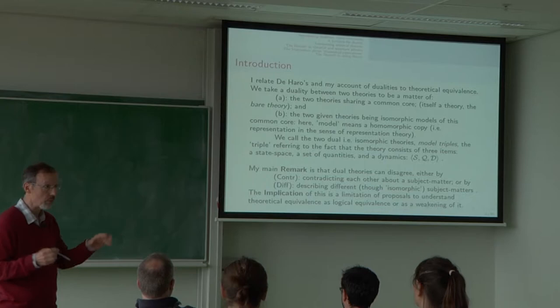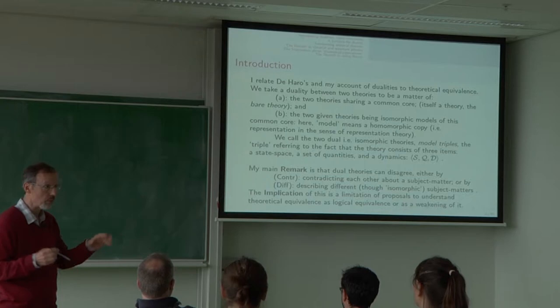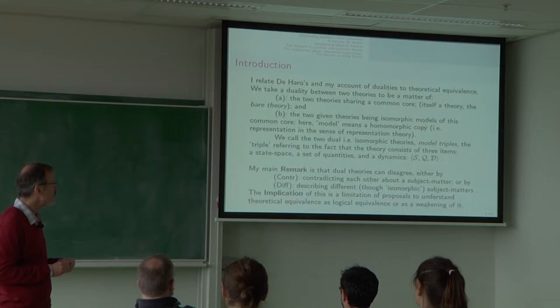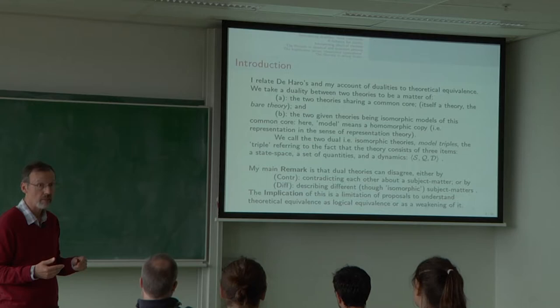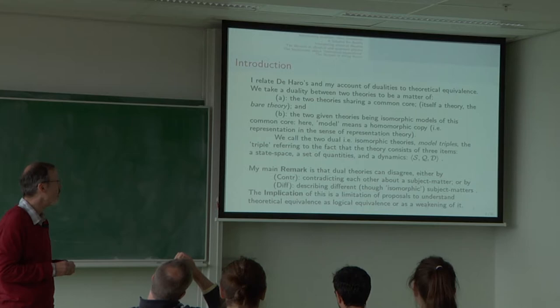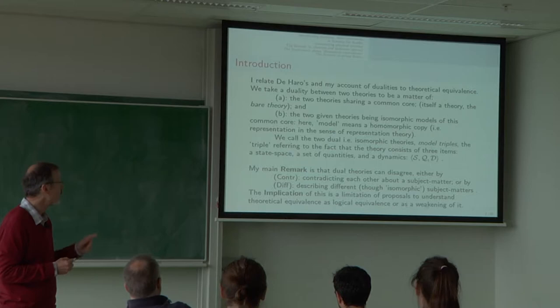You will know that in general, if you start with the bare theory and you take two representations of it, the representations are in general not isomorphic with respect to the bare theory structure. Think of a group, it can have a representation as three by three matrices, it can have a representation as seven by seven matrices. They're both homomorphic copies of the group, but they're by no means isomorphic one to another. But when we have isomorphism of these homomorphic copies with respect to the structure of the bare theory, we say there is a duality.